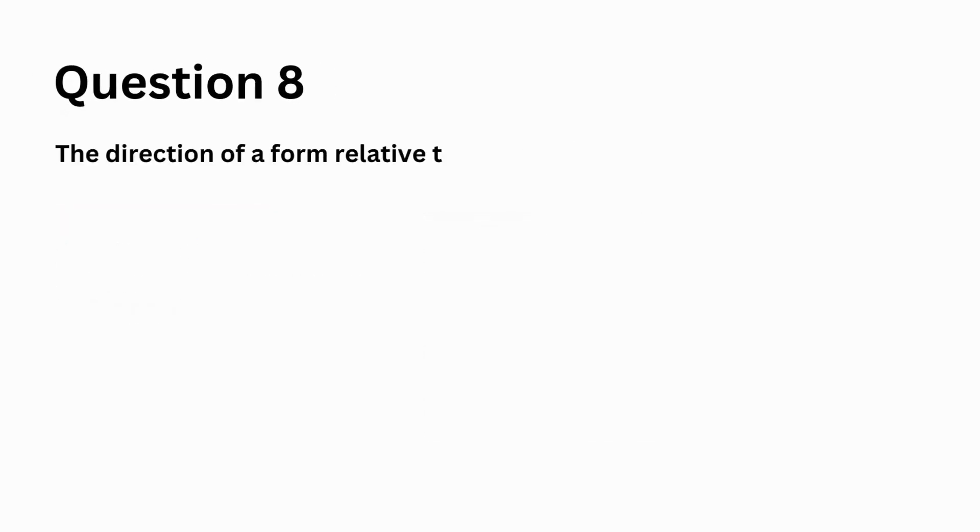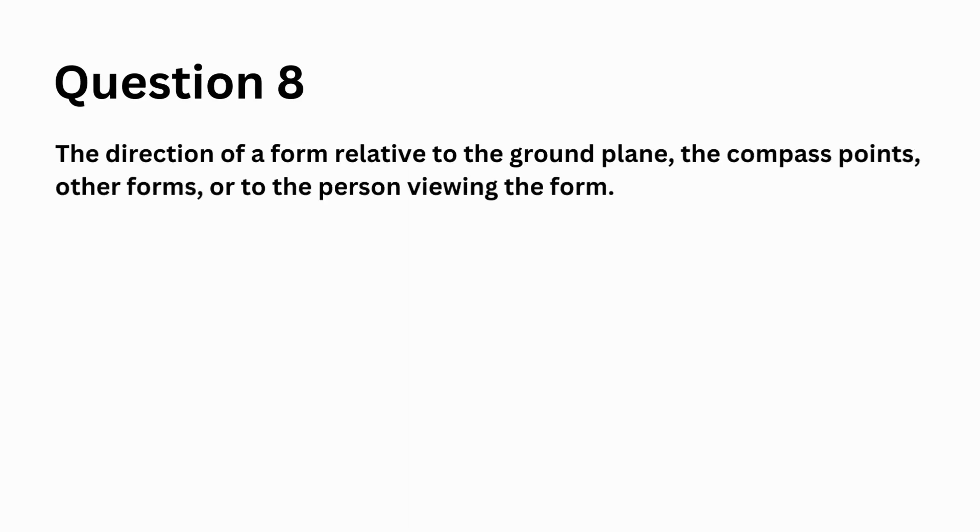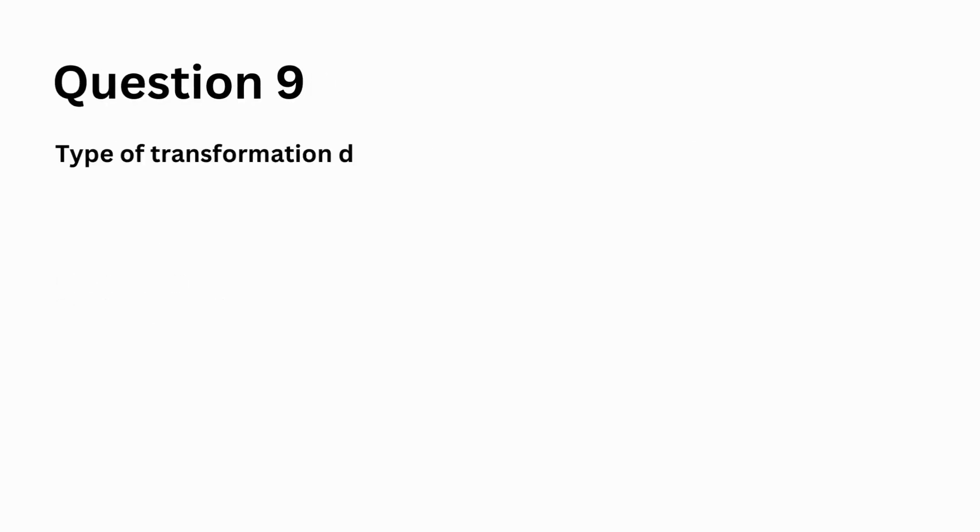The direction of a form relative to the ground plane, the compass points, other forms, or to the person viewing the form. A. orientation, B. position, C. location, D. visual inertia. Answer: A. orientation.